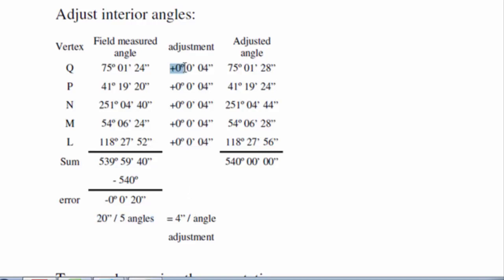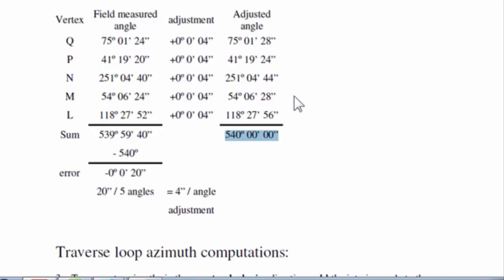If I apply that 4-second correction to each angle — for example, 75° 01' 24" plus 4 seconds gives 75° 01' 28" — and so forth down the line. Once I re-sum the adjusted angles, they come out to 540 degrees. Now this doesn't make those angles perfect — it just makes their sum hit theoretical perfection. There is still some error in those angles, and we will see the effects of that as we continue with our computations.